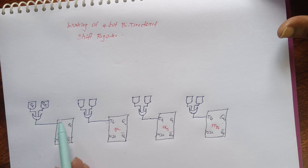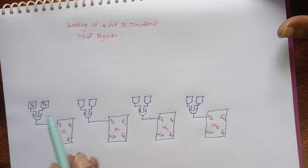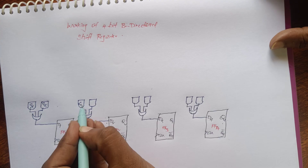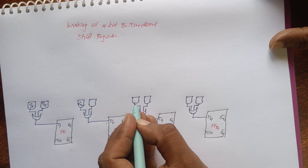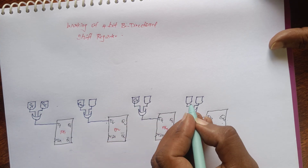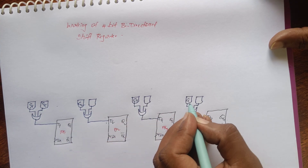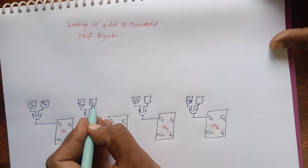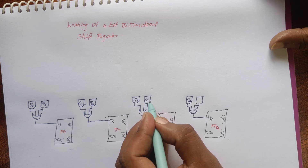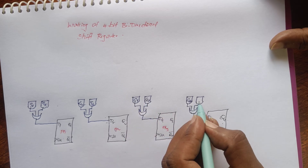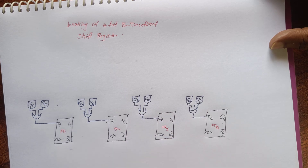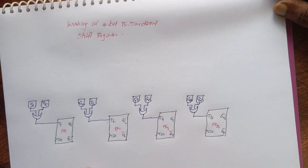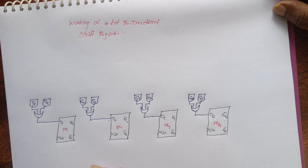The same gate combination is repeated for each flip-flop stage. Gates G2 and G6 feed the second stage, G3 and G7 feed the third stage, and G4 and G8 feed the fourth stage. These are the four gate combinations for the entire circuit.